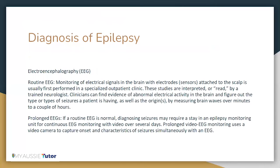How do we diagnose epilepsy? The most commonly used methodology for diagnosis of epilepsy is electroencephalography, that is EEG. A routine EEG is a monitoring of electrical signals in the brain with electrodes attached to the scalp. First performed by a specialized outpatient clinic and interpreted by a trained neurologist, it may find evidence of abnormal electrical activity in the brain and determine the type of seizures a patient is having as well as their origin, by measuring brain waves over minutes to a couple of hours. If a routine EEG is normal, diagnosing seizures may require a stay in an epilepsy monitoring unit for continuous EEG monitoring with video over several days.